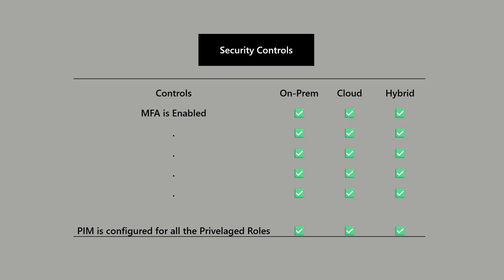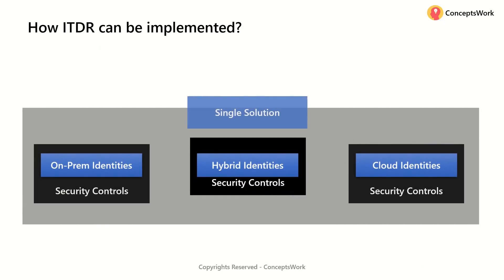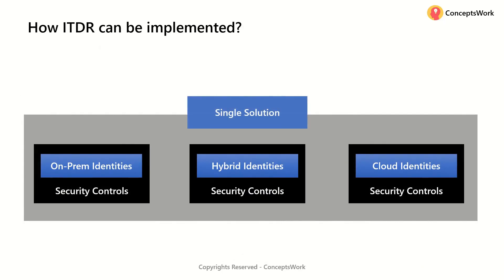When I say security controls, I mean the typical controls defined for identity: MFA should be enabled, RBAC should be in place, PIM should be there, PAM should be there — whatever is defined from an identity standpoint. You have to make sure these controls are consistent across all different identity types.